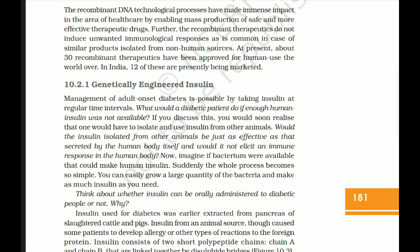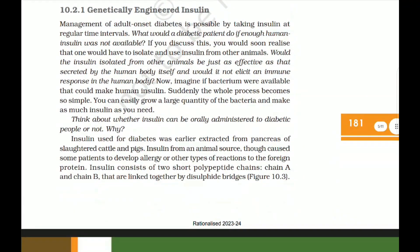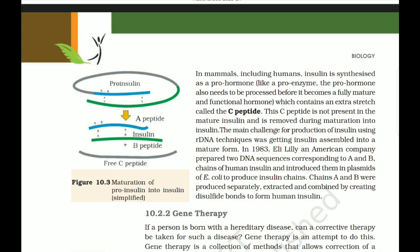If bacteria were available that could make human insulin, the whole process becomes simple — large quantities of bacteria could be grown to produce as much insulin as needed. Insulin consists of two short polypeptide chains — chain A and chain B — that are linked together by disulfide bridges. In mammals including humans, insulin is synthesized as a pro-hormone called proinsulin, which needs to be processed before it becomes a fully mature and functional hormone.